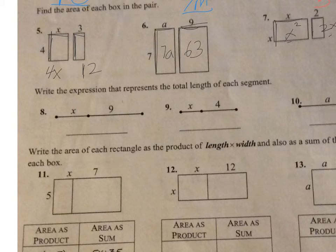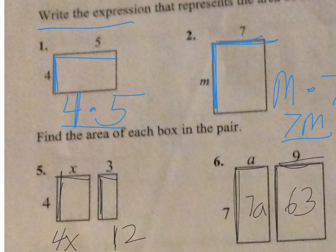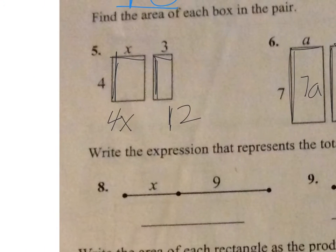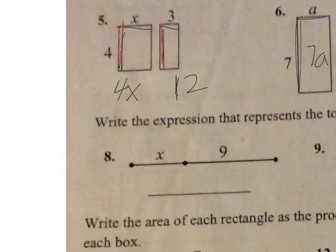So as we build on this, we've started out writing expressions for areas of rectangles. Then we started writing out expressions for two rectangles where they had a common side length. So this one had 4 and 4. Now we're going to look at that whole x plus 3 thing we had going on.